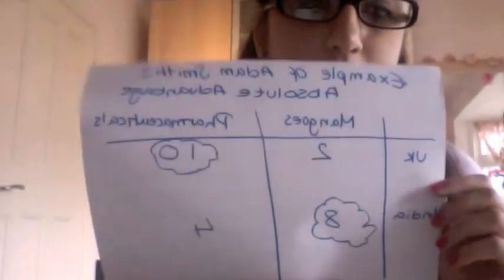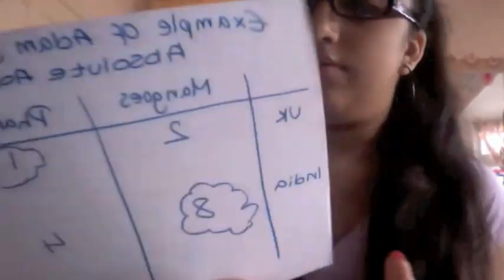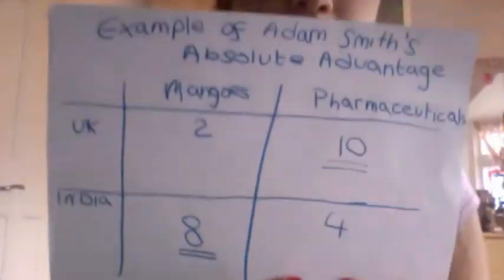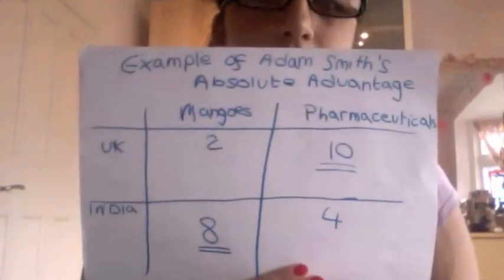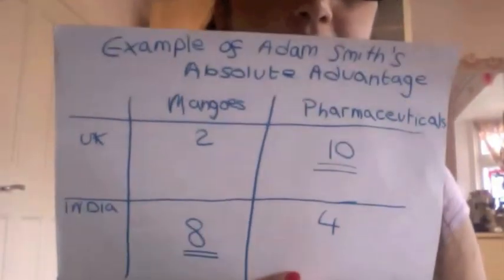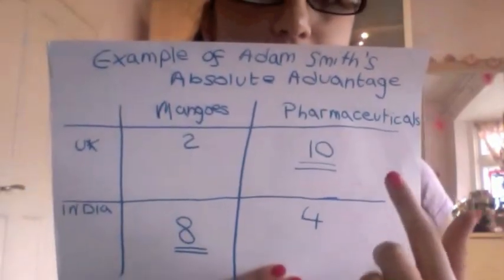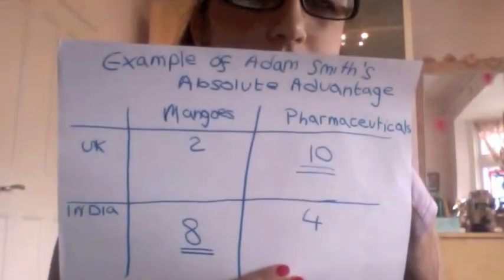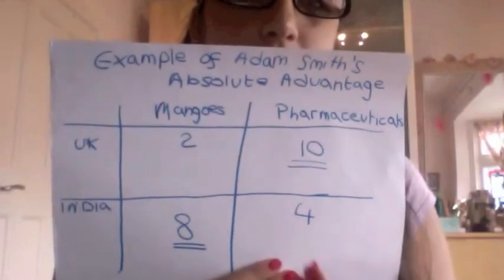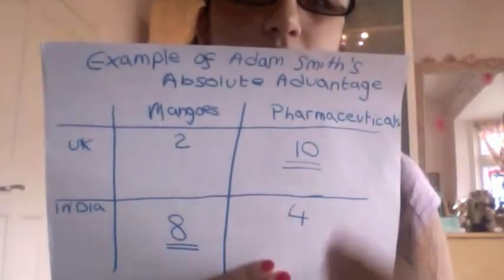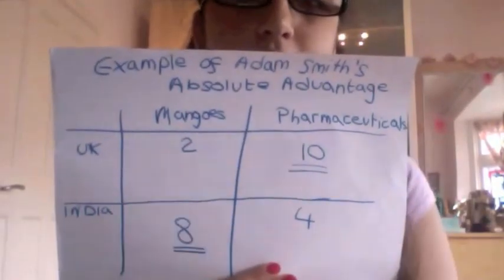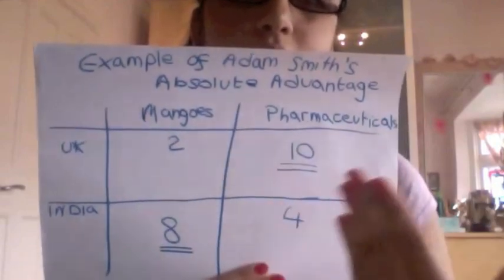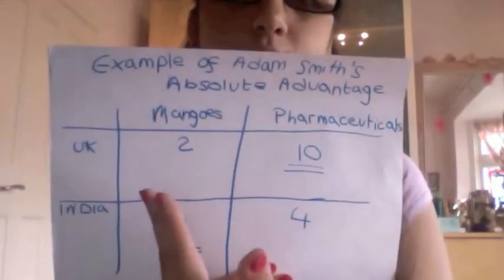Let's see an example of absolute advantage to make things clearer. Assuming we have two countries, UK and India, and two products, mangoes and pharmaceuticals. All resources in the UK are split in half: 50% go to the pharmaceutical industry, 50% go to mangoes. They produce a grand total of 12 products — 10 in pharmaceuticals and 2 in mangoes.